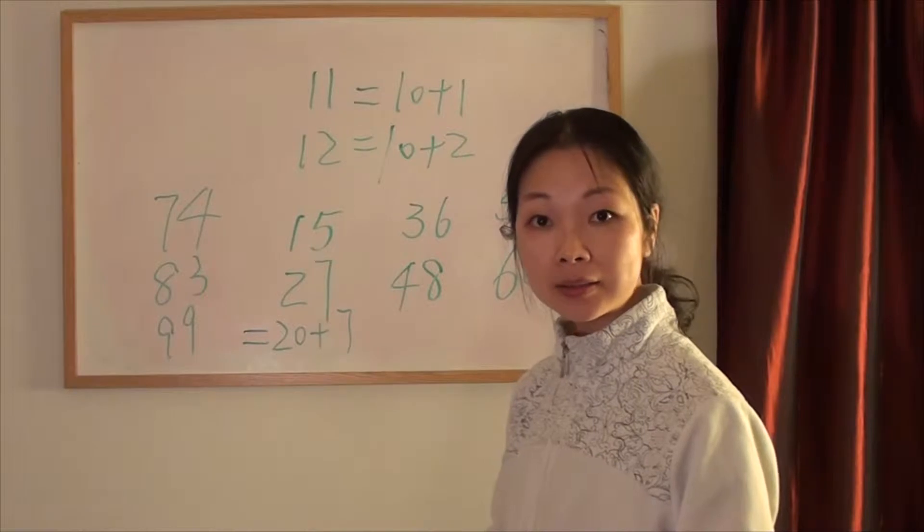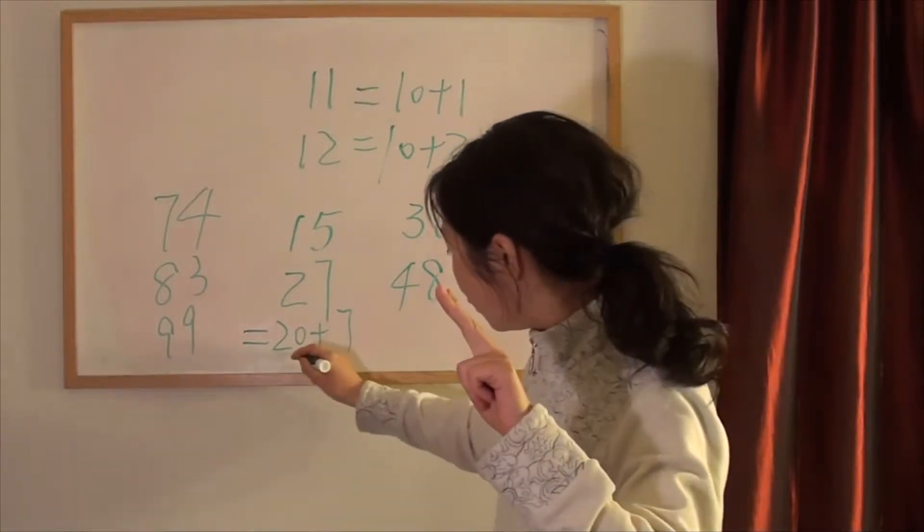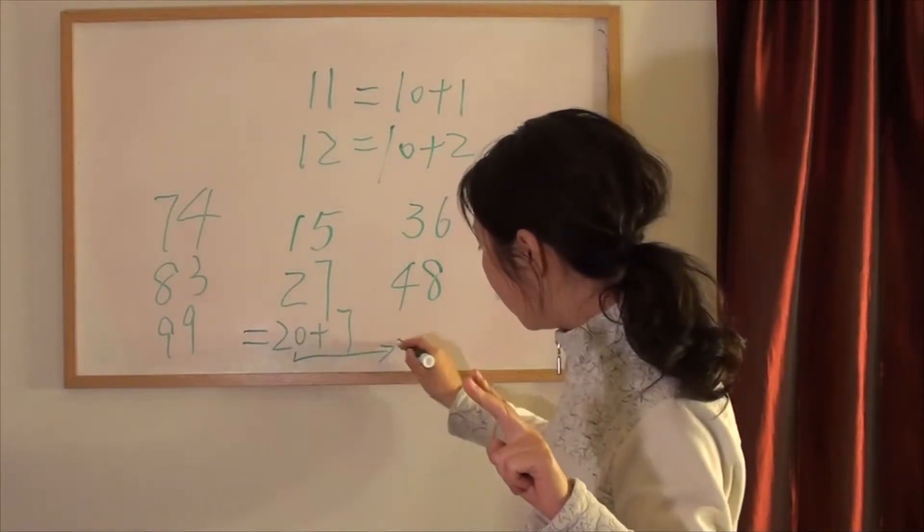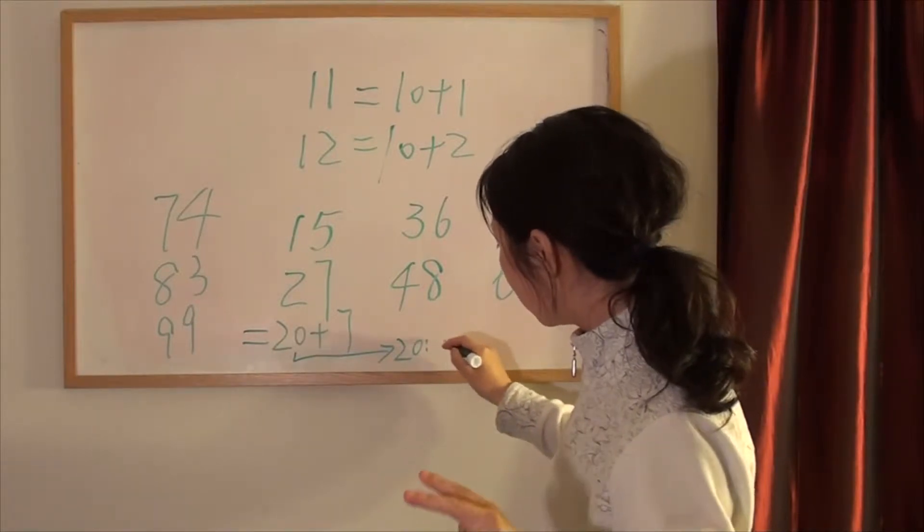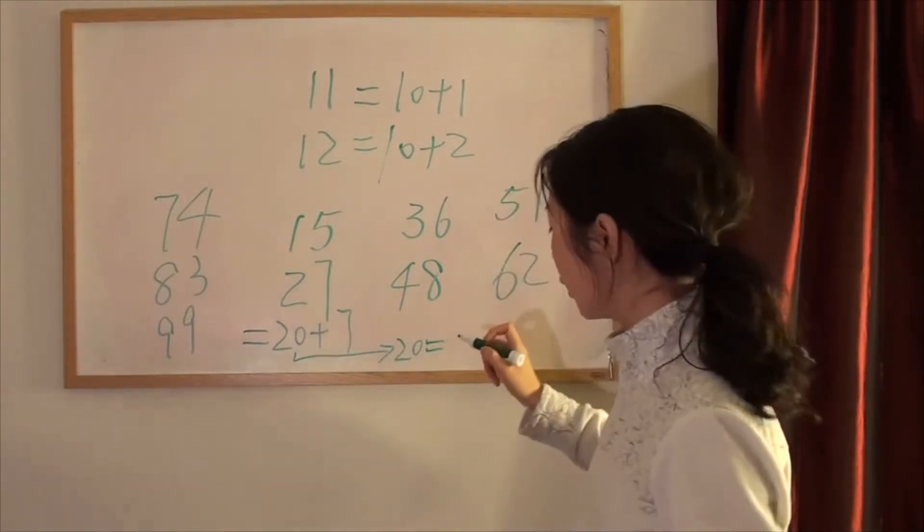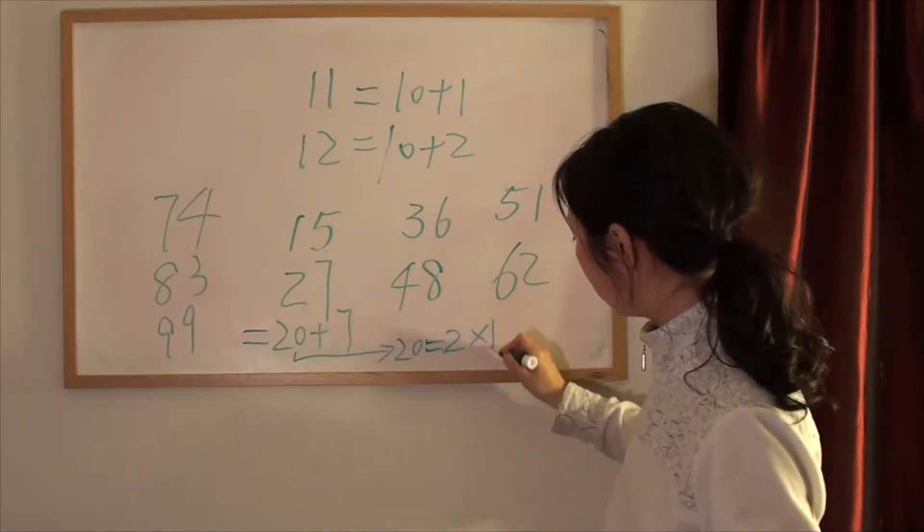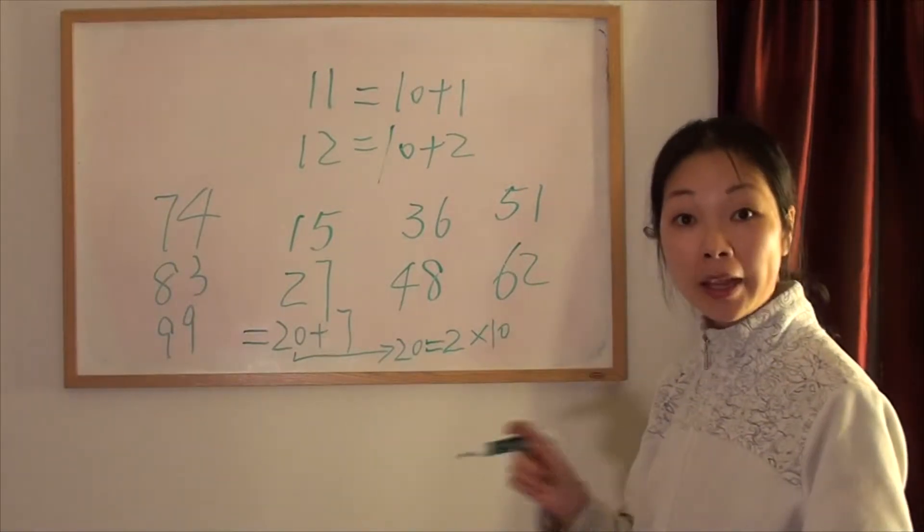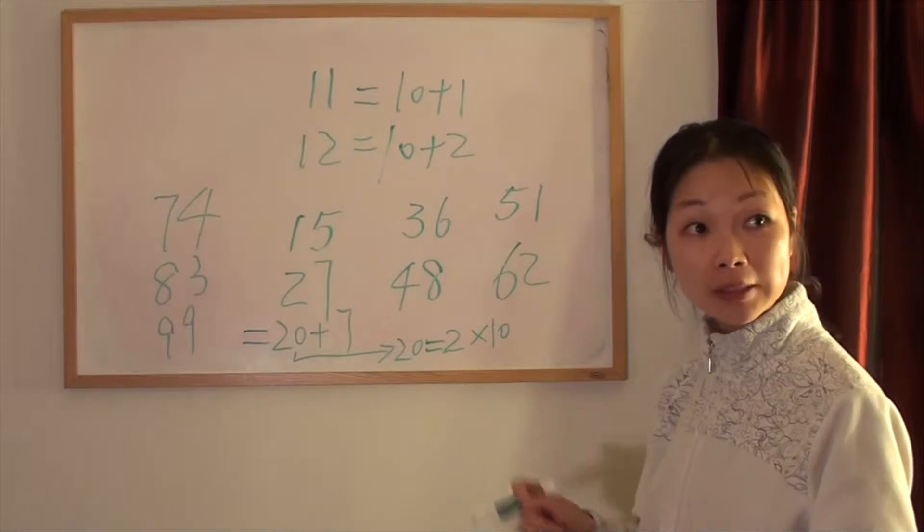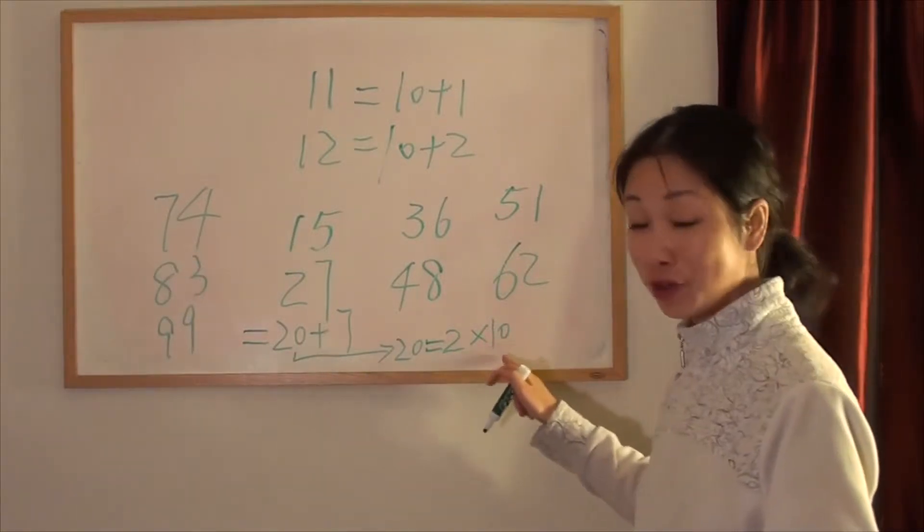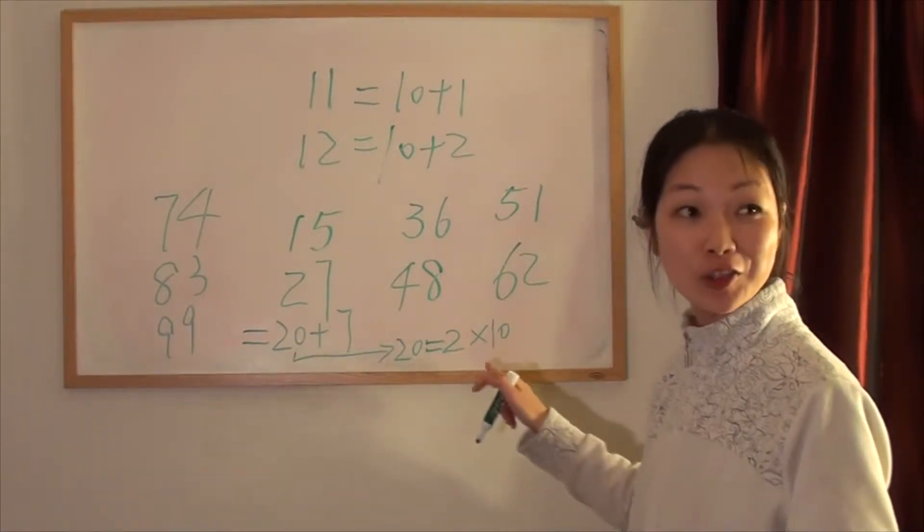20 is, still do the math. 20 is, look, two ten, right? Two ten, how to say that? 二十, 二十, easy.